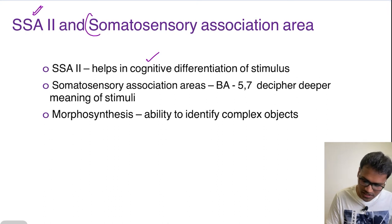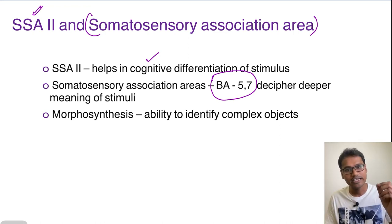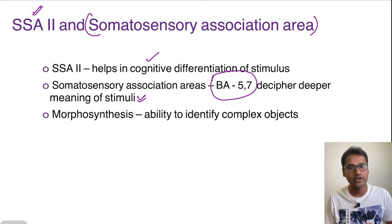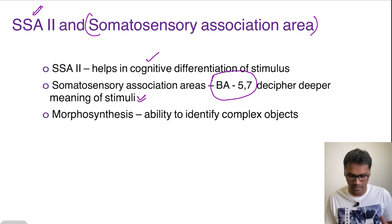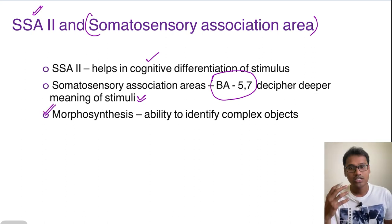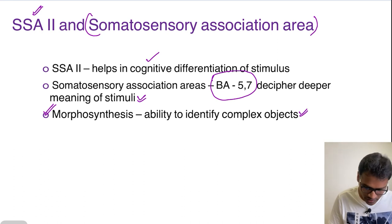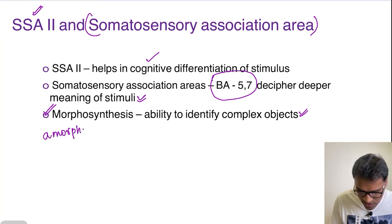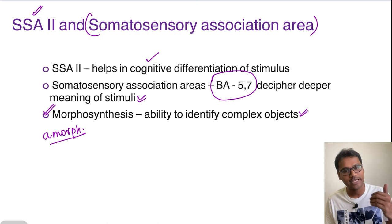Coming to the somatosensory association area — already we have seen it is included in Broadman's area 5 and 7. It helps to decipher the deeper meaning of a stimulus. Suppose a person has a lesion in one half of the somatosensory association area — he is not able to recognize objects present in front of him. He can identify the stimulus but will not be able to make meaning out of it and will completely ignore that other half. The process of recognizing complex objects is called morphosynthesis; if there is a lesion it presents as amorphosynthesis.